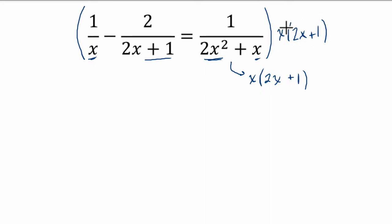So in other words, x and 2x plus 1 is a multiple of all three denominators. Why is it so helpful? Well, when we multiply it out we're going to cancel. In the first term here we have 1 in our numerator, 1 times x times 2x plus 1. So we're going to multiply everything by that common factor.